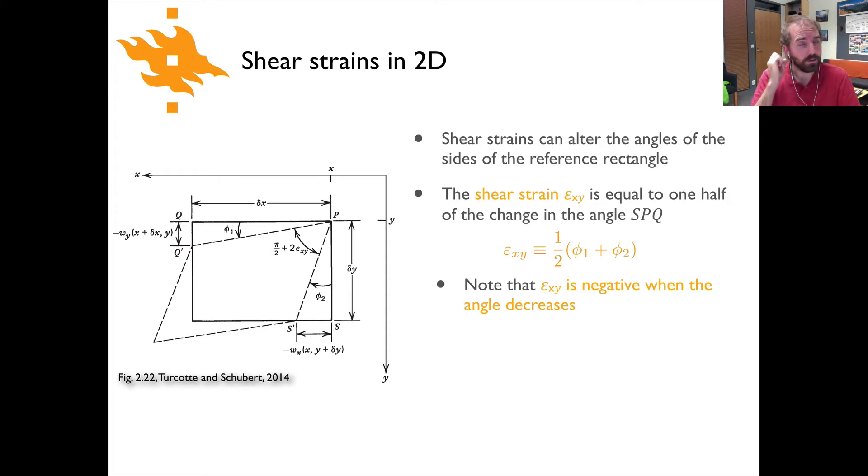Okay, so now if we move on to shear strains, we could talk about something a little bit different. Previously, we had looked at an example where the angles of the different sides of this rectangle hadn't changed. They might have had a lengthening or shortening of one of the sides, but there was no change in angle. And changes in angles in materials, of course, will happen when they undergo shear strain.